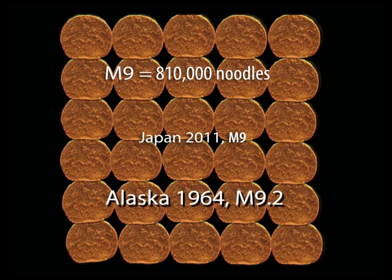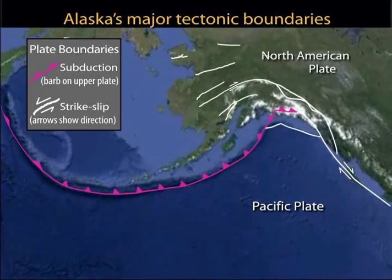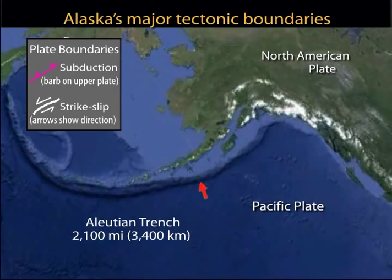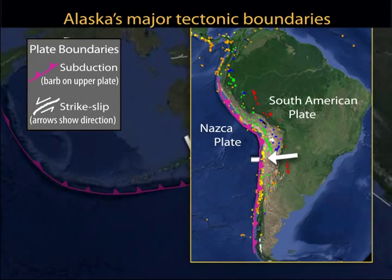To address the great earthquake rupture process, let's first examine the plate tectonics of the North Pacific region. The distribution of earthquake epicenters, shown earlier, roughly defines plate boundaries. The Aleutian Trench marks a 2,100-mile-long subduction boundary between the Pacific and North American plates, similar to the Nazca Plate diving beneath the South American Plate at the Peru-Chile Trench. Along southeast Alaska and western British Columbia, the Pacific Plate grinds against the North American Plate in a strike-slip motion, as it does along the San Andreas Fault in California.